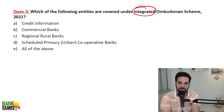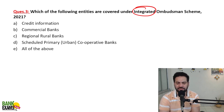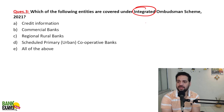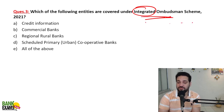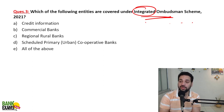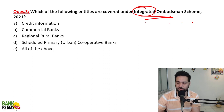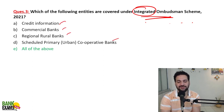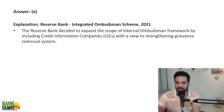Earlier, commercial banks had separate ombudsman offices, cooperative banks had separate ones — they were all different. Now everything has been brought under one place. Credit information companies have also recently been brought under the Integrated Ombudsman Scheme. So commercial banks, RRBs, and urban cooperative banks all come under the Integrated Ombudsman Scheme.